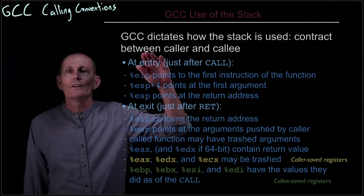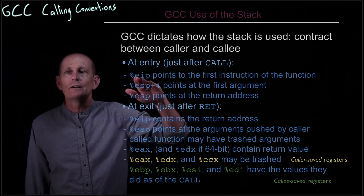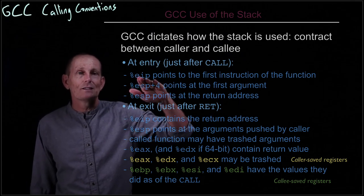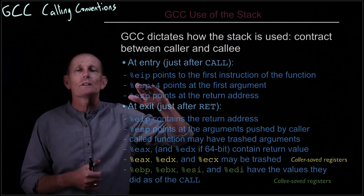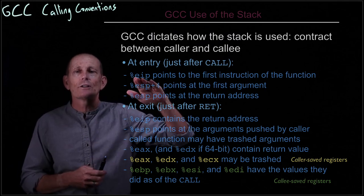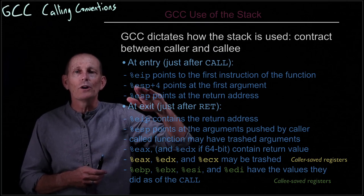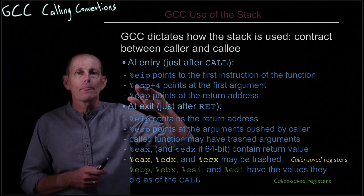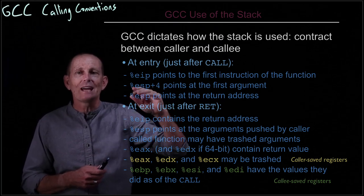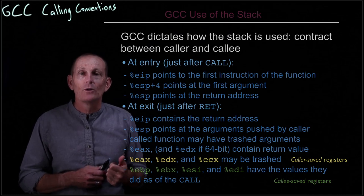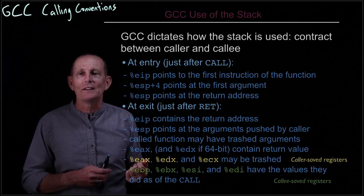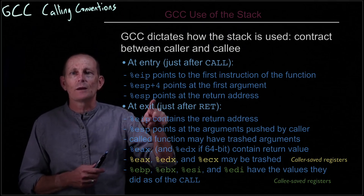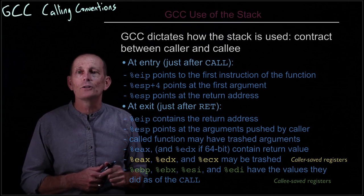First, just after the call, EIP points to the first instruction of the function — we're calling the function so the instruction pointer points at the first instruction. Second, the stack pointer plus four points at the first argument. The stack pointer itself is pointing at the saved instruction pointer, i.e., the return address. That's how you enter the function.